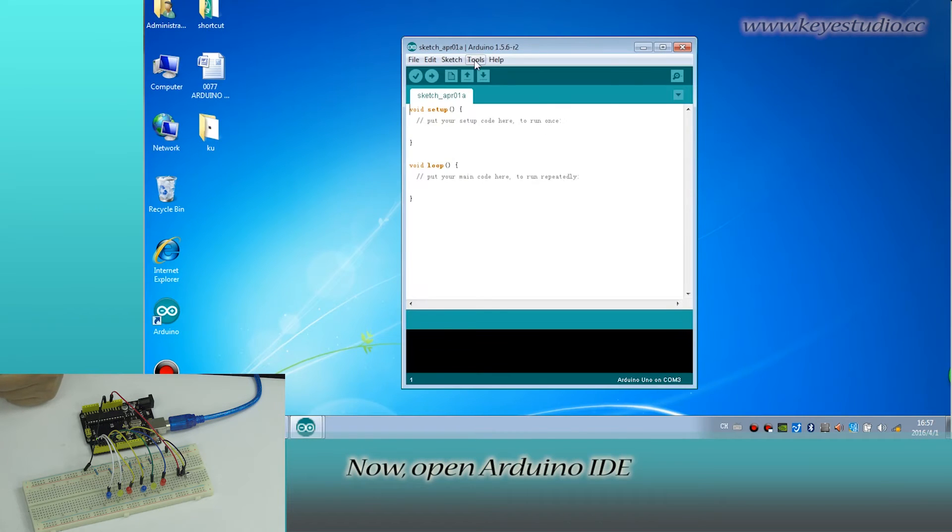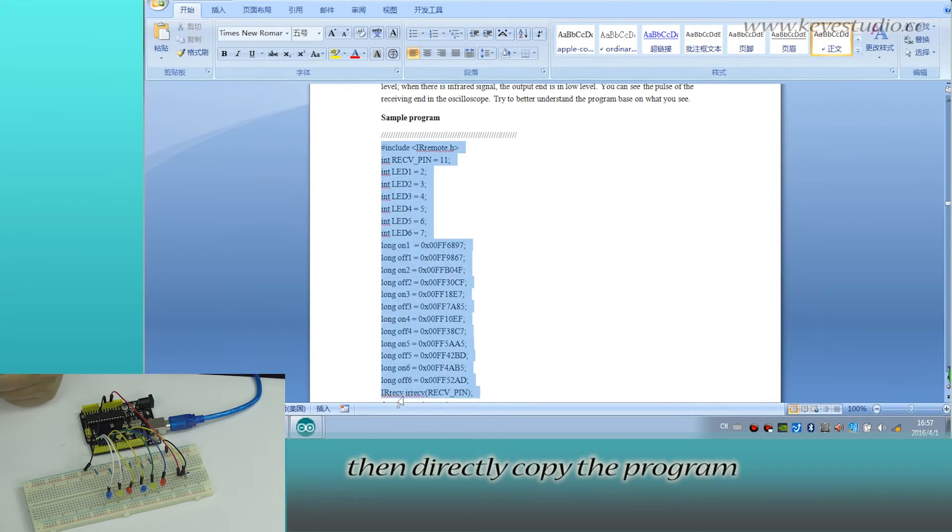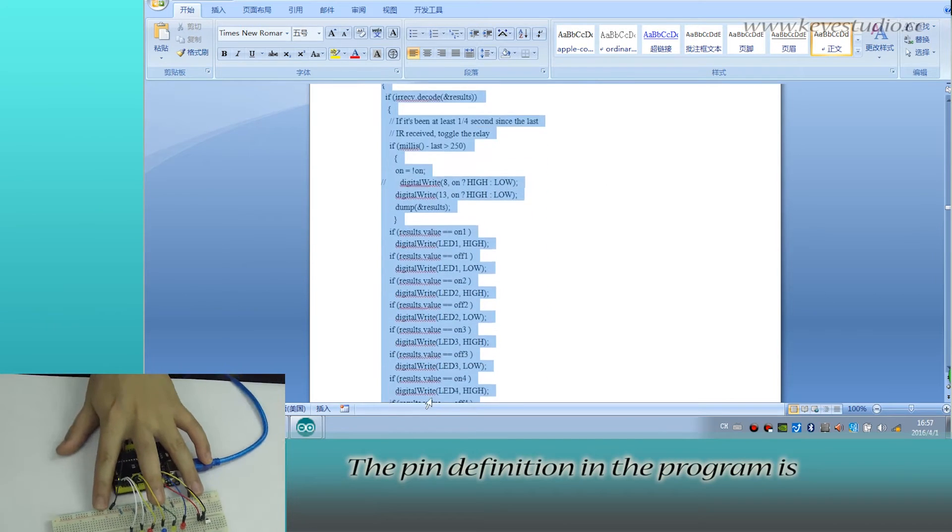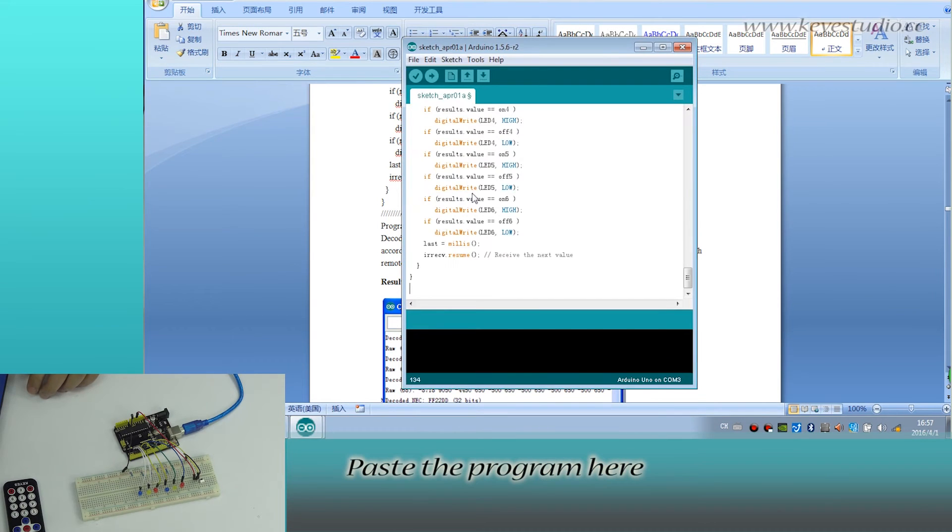Now open Arduino IDE. Select the board and port. Then directly copy the program. The pin definition in the program is according to the circuit connection. Paste the program here.